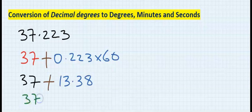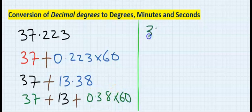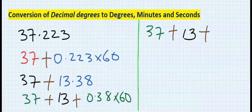Next, I will keep the 37. Then here, I will leave the 13. And the 0.38 will multiply 60 again. Hence, I'm going to have 37, then 13, then multiplying this, I'm going to get 22.8.